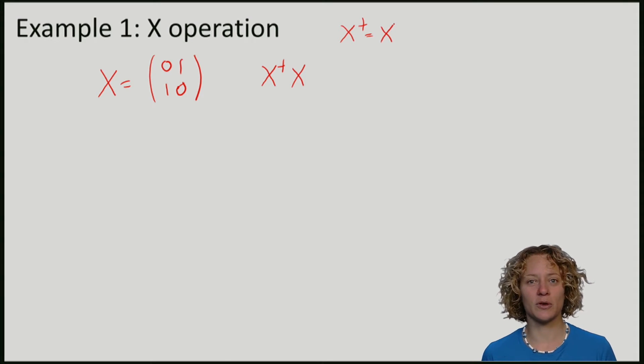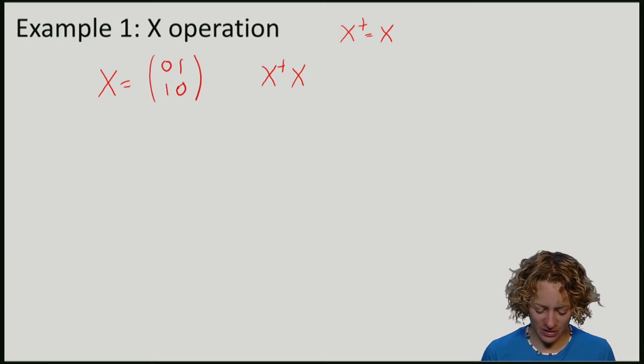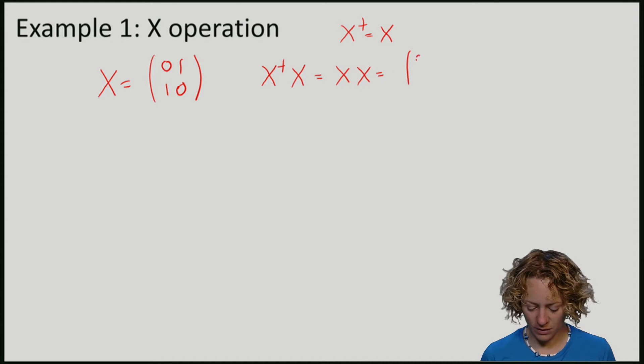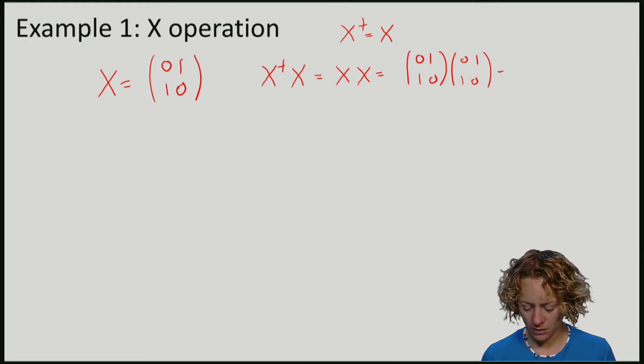So X is what we call a Hermitian matrix. To check that the matrix is unitary, we just have to compute X times X. And if you compute that, you can easily convince yourself that this gives us exactly the identity matrix.